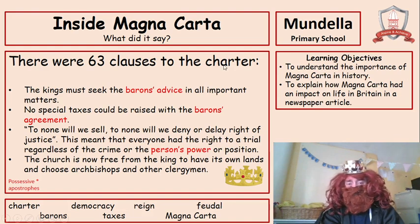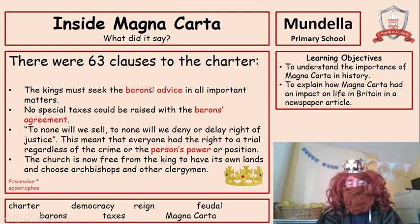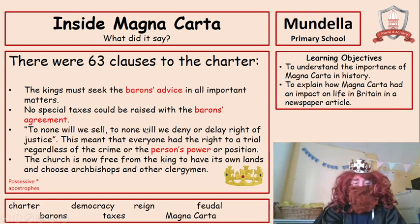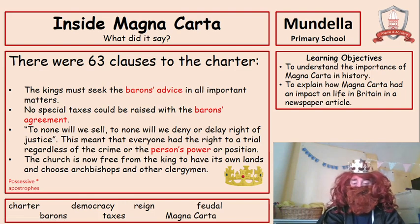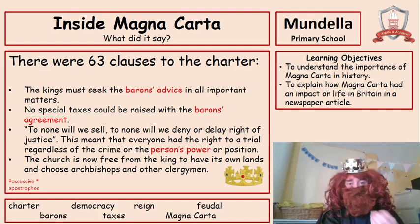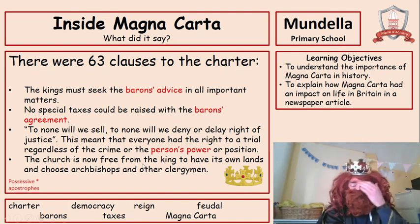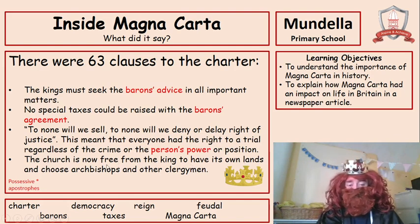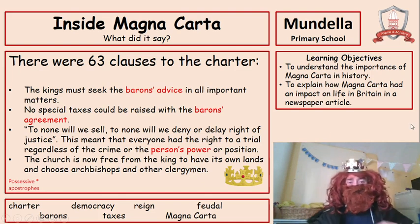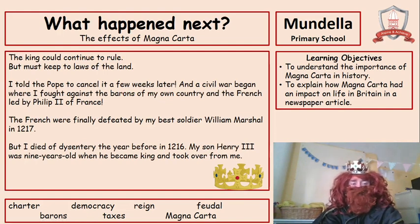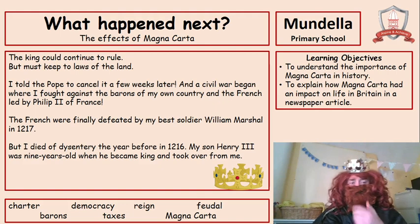There were 63 clauses to the Charter. I must seek the barons' advice in all important matters — note the possessive apostrophe there: barons' advice. No special taxes could be raised without the barons' agreement. To none will we sell, to none will we deny or delay right of justice. That part meant that everyone had the right to a trial, regardless of the crime or the person's power or position — which I thought was absolutely unreasonable, for if I say something goes, then that's how it should go. The church is now free from the king to have its own lands and choose archbishops and other clergymen. The king could continue to rule, but must keep the laws of the land. No other king had to do that. I told the Pope to cancel it a few weeks later.